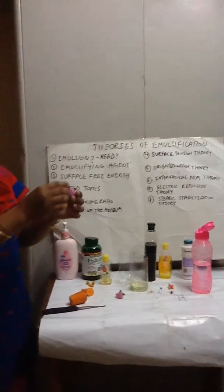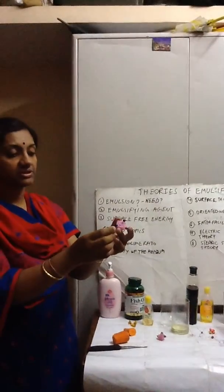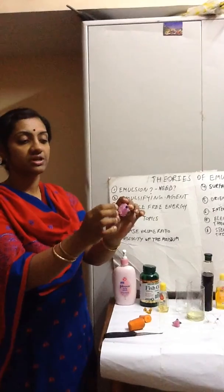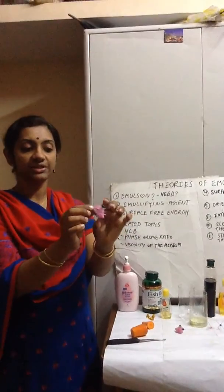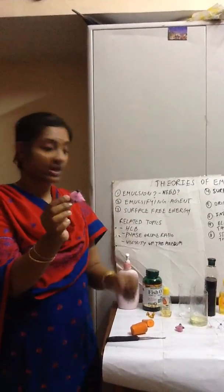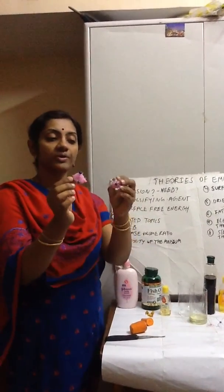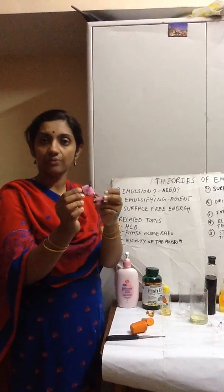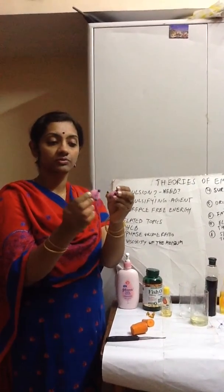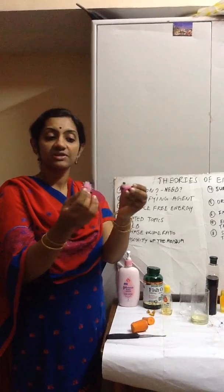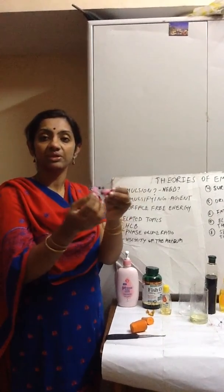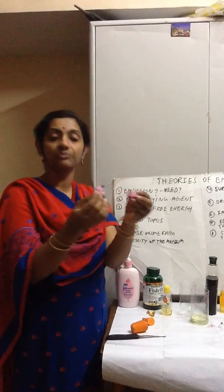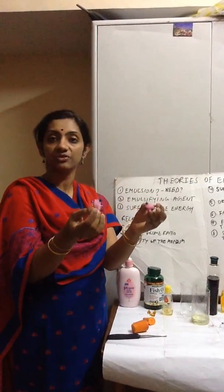The other one is the electric repulsion theory. Imagine this with the pin heads — each of them is a charged entity, the thermocol balls representing a charge. When the emulsifying agent is adsorbed onto the oil globule, both globules are of the same charge and they tend to repel each other. This is the electric repulsion theory — they will not come together, because of which the system is stabilized.